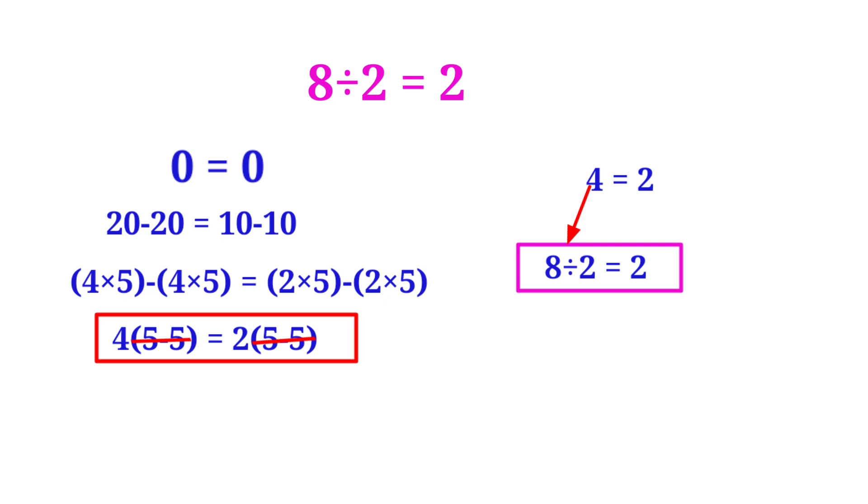See here. Here 4 times (5 minus 5) equals 2 times (5 minus 5). Actually, 5 minus 5 is equal to 0.